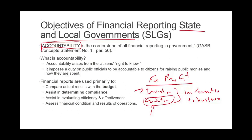Accountability is the cornerstone of all financial reporting in government, according to the GASB. So what is accountability? Basically, giving the citizen the right to know. When we provide financial information — financial or non-financial — we are giving the citizen the right to know. The right to know what? The right to know how we raised the money and how we spent the money. In the earlier session, we looked at something called inter-period equity.